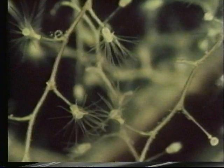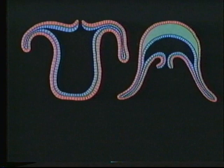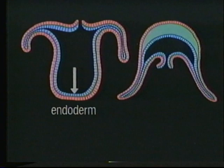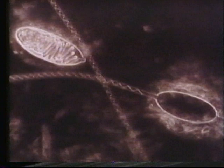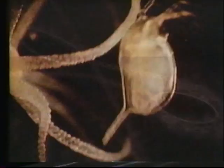The coelenterate body wall is made up of two layers, an outer layer, or ectoderm, and an inner layer, or endoderm. A jelly-like substance separates the two. On the tentacles there are stinging cells which shoot barbed threads into any passing water creature which touches them, capturing and paralysing it. Food enters and waste products leave through the mouth, the only opening.